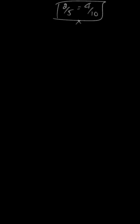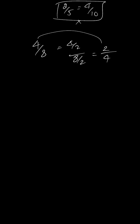Similarly, if you divide both terms by the same number, the ratio remains equal. For example, 4 by 8: divide both by 2 to get 2 by 4. So 4 by 8 equals 2 by 4. In general, a by b is equal to (a/m) by (b/m). This is the division property of ratio.